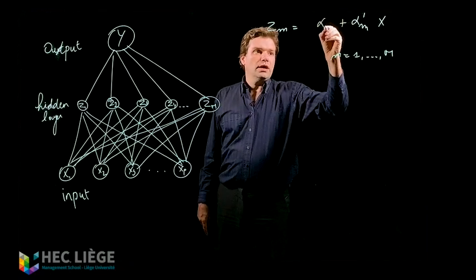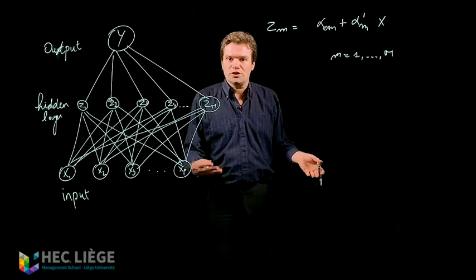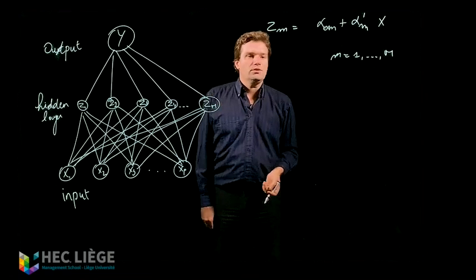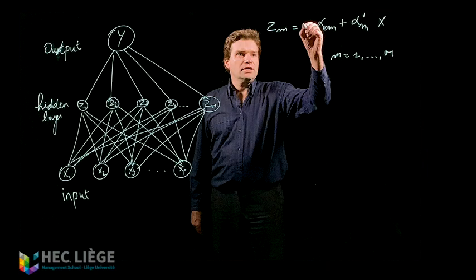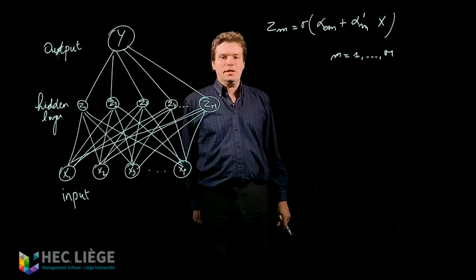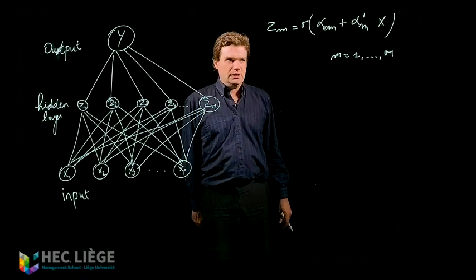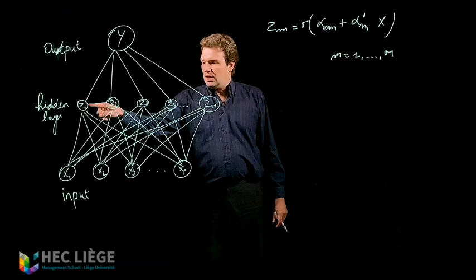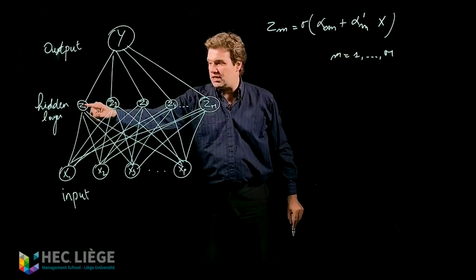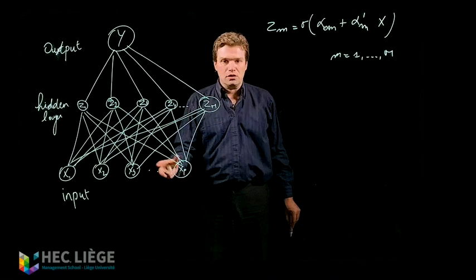To that, we add a constant term. It is usual in regression to include intercepts, and here this constant term is often named in neural networks a bias. Next, we take a function sigma. Sigma is what is named an activation function — this is a sigmoid, which we are going to explain in a few minutes. This is the way we get zm from x. Each z is a combination of all the x, of all the covariates.